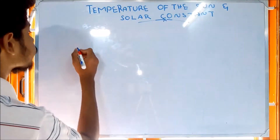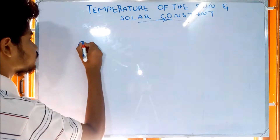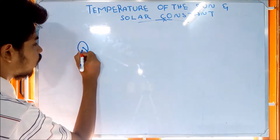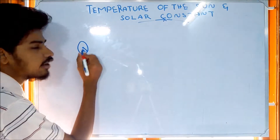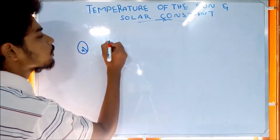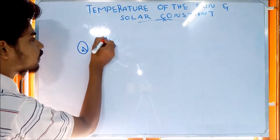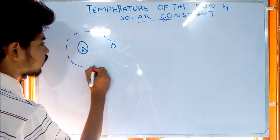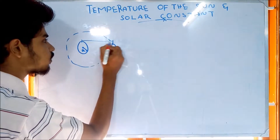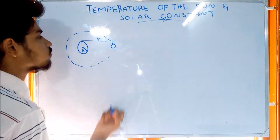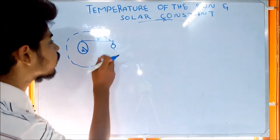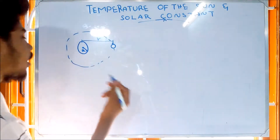Let me assume that the sun is the center. The radius of the sun is r. The earth is in an orbital pattern. The center of the sun and the center of the earth — this is the radius of the sun.